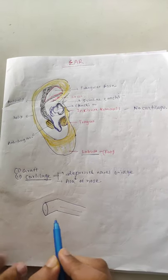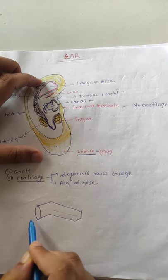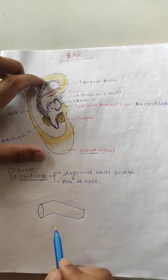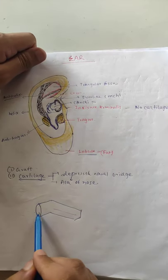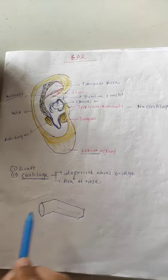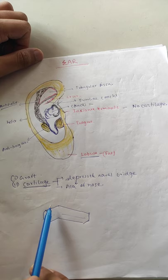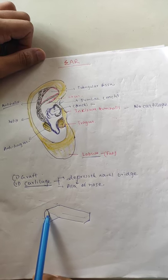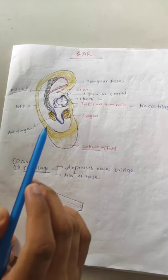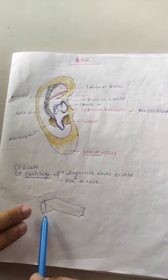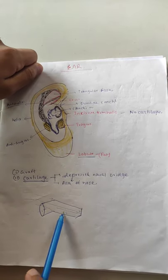When we want to visualize the tympanic membrane using an otoscope, we pull the pinna upward, backward, and laterally for better visualization of the tympanic membrane.